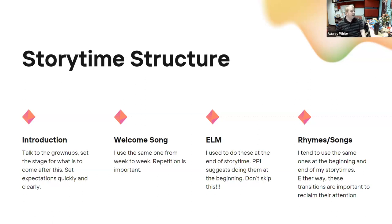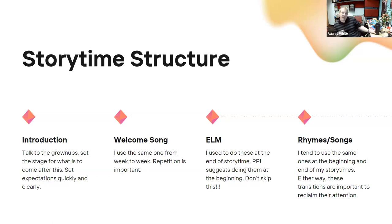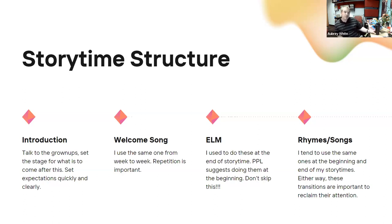Next up is where I do the early learning messages. I used to do these at the end, but Phoenix Public recommends doing them at the beginning so that you can refer back to them for reinforcement throughout the story time. I find I like that better — I can say, 'Hey, remember we talked about the importance of rhyming at the beginning of story time? Look at these words on the page — they rhyme with one another.' Wherever you decide to do your early learning message, I like doing it at the beginning because then you don't skip it.